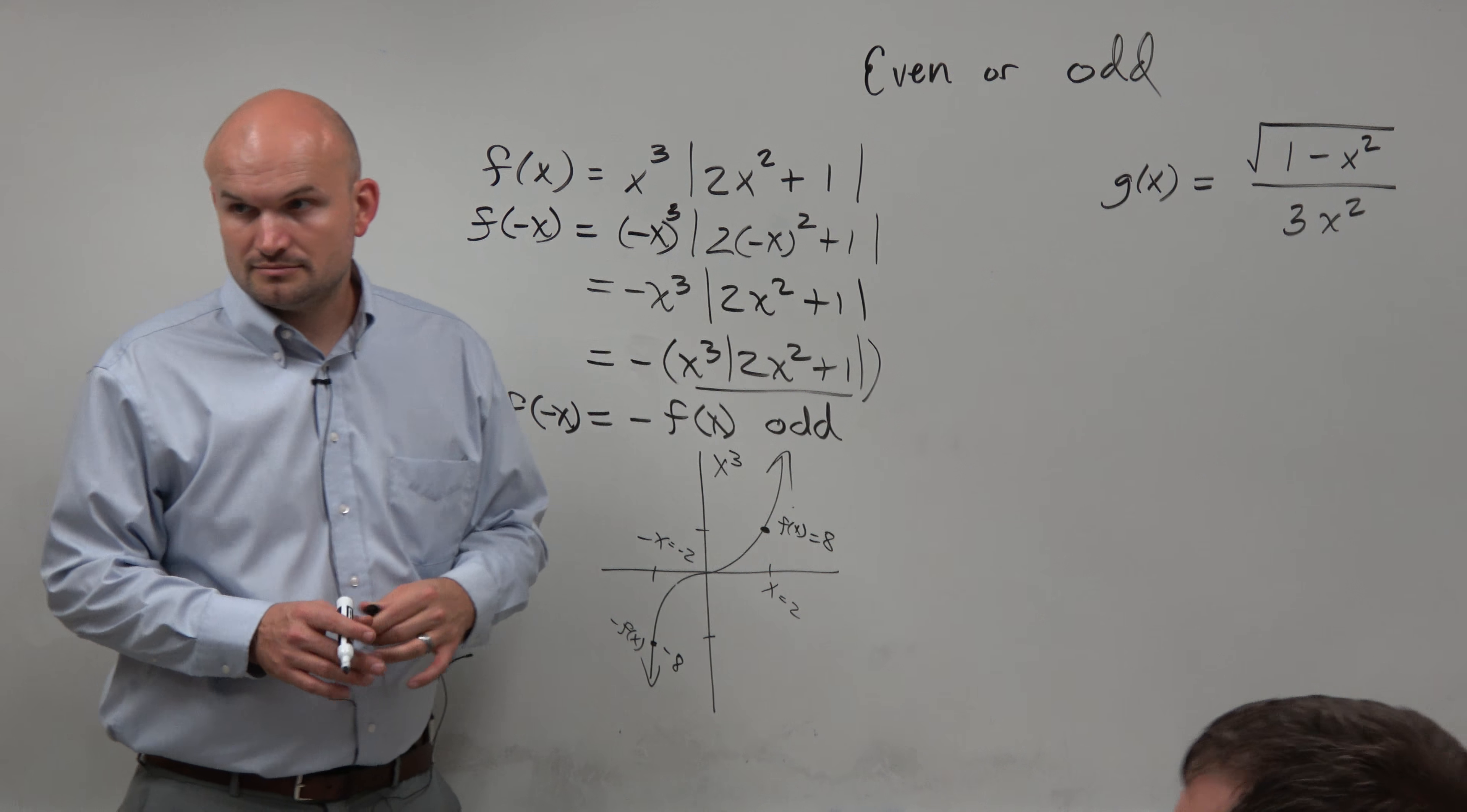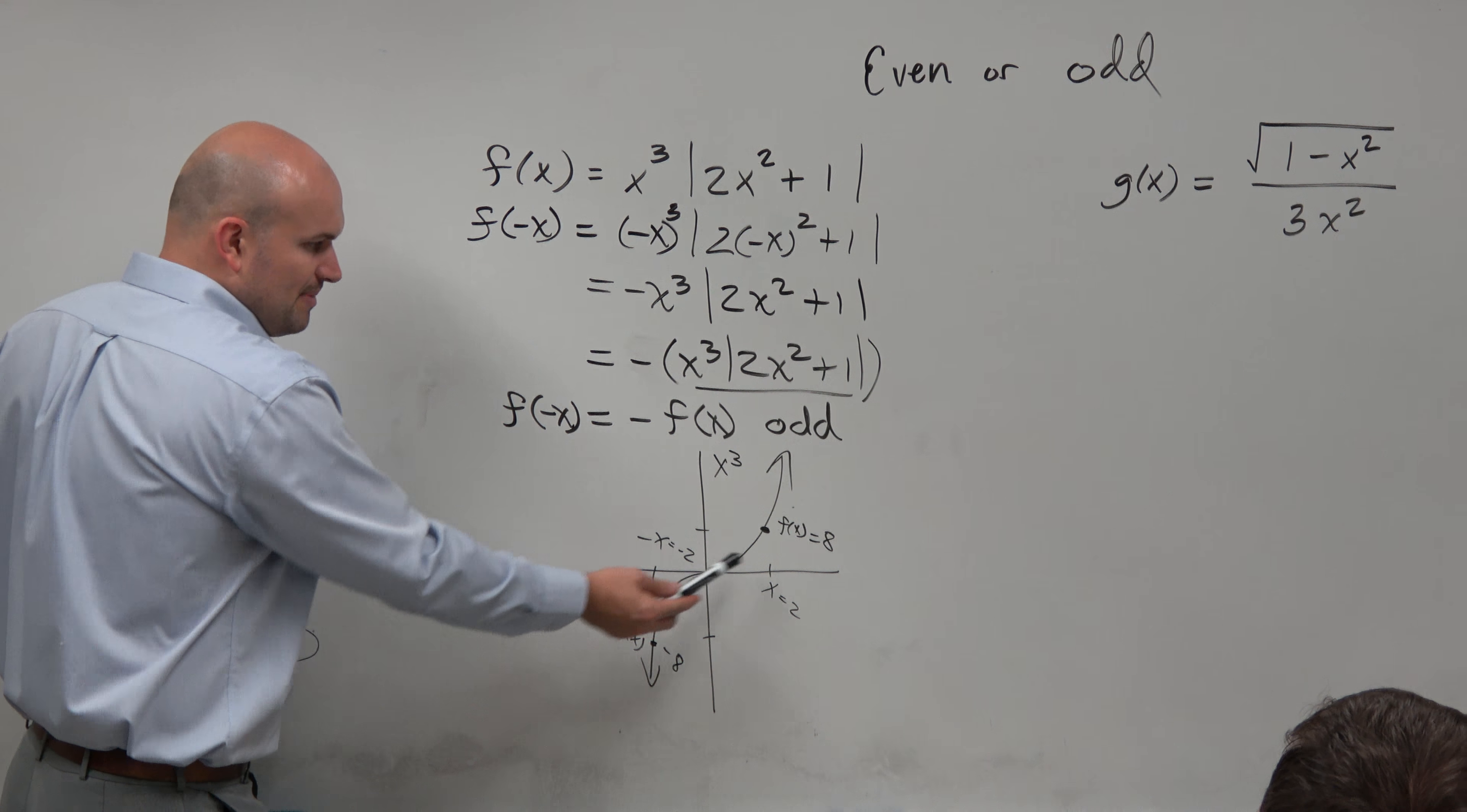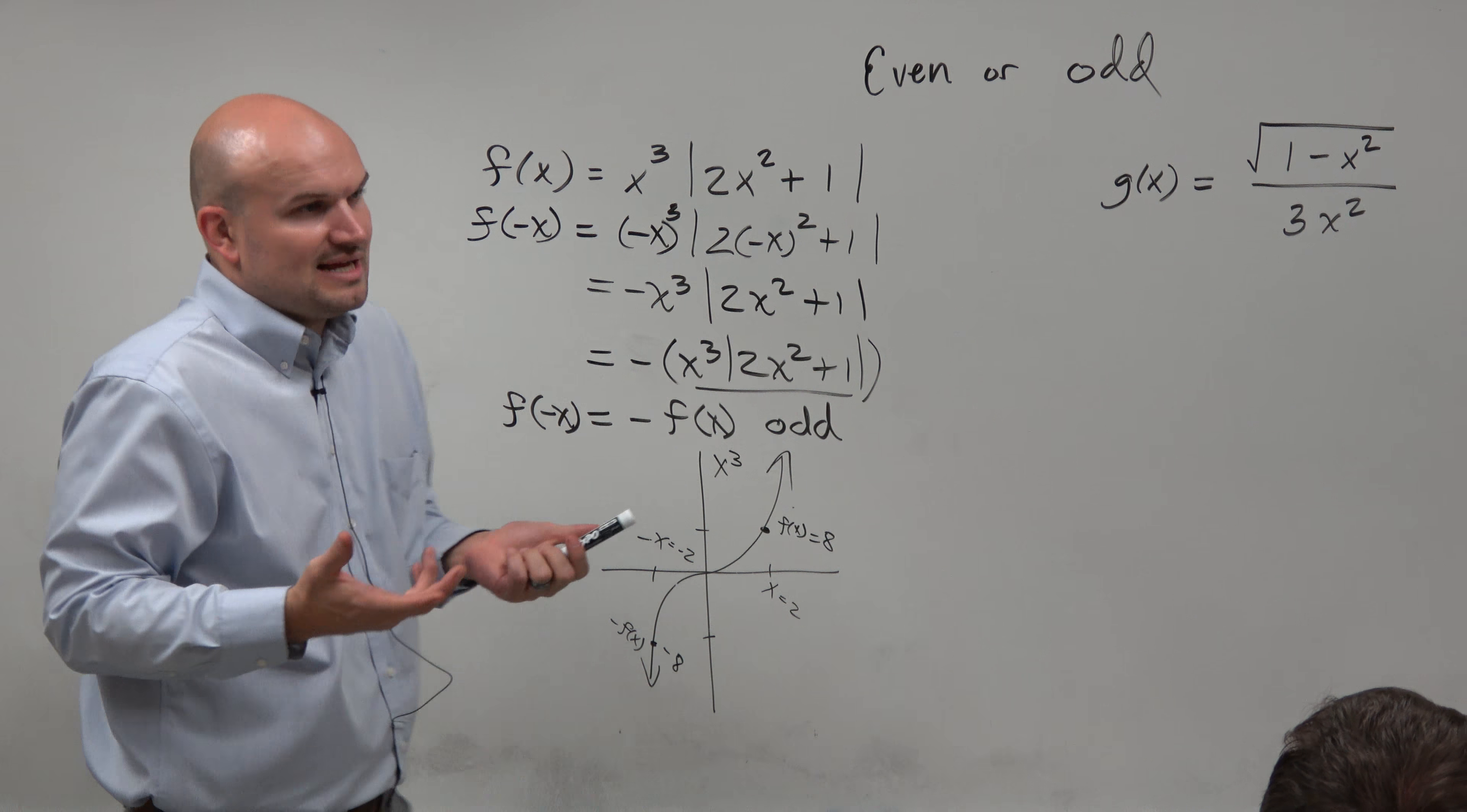So do we have to use negative x? Can we use a random number, say 1? [Student question] Yes, to your answer, yes. So if you plug in a positive number, you're going to get f of x, or whatever the f of x is. If you plug in the negative version, you're going to get the negative value. Or if you get the negative value of that, then it's an odd function. So it's going to be the opposite. It's going to be the exact opposite.